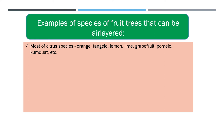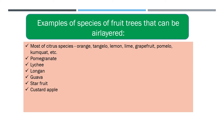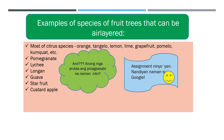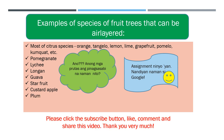For citrus species, there is actually a better method of reproduction aside from marcot cutting — budding. That propagation method may be discussed in upcoming videos, so please subscribe and ring the bell icon for notifications. For lemons, however, budding and marcot cutting are the most appropriate and fastest methods, especially when no rootstocks are available. Other fruit trees that can be air layered include pomegranates, lychees, longans, guavas, star fruit, custard apples, plum, pear, and possibly other fruit trees in your local area such as avocado or guanabana.